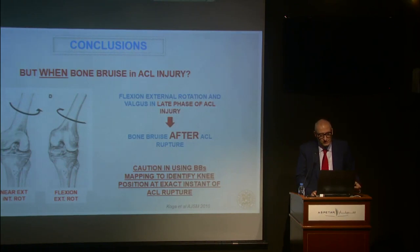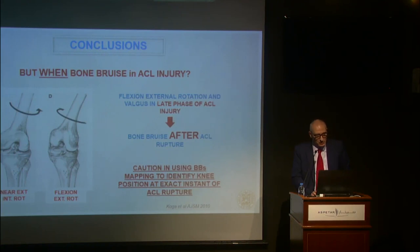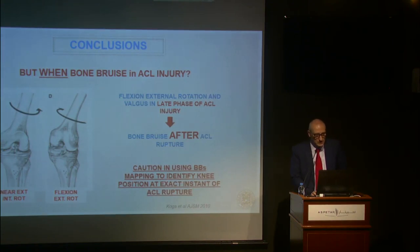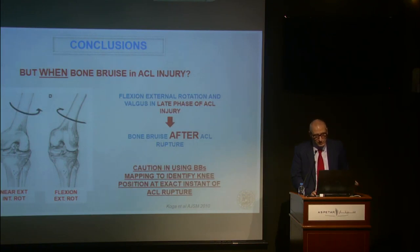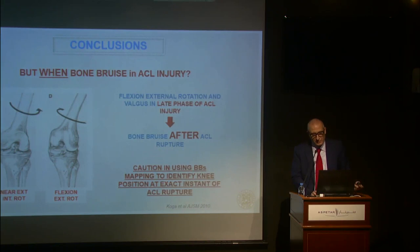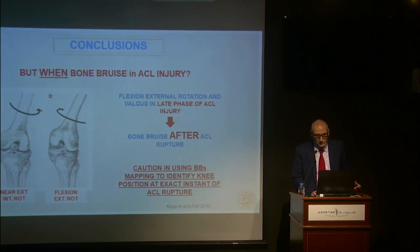Flexion, external rotation, and valgus are in the late phase of ACL injury. So probably for us the bone bruise occurs after ACL rupture. We urge caution in using bone bruise mapping to identify knee position at the exact instant of ACL rupture, because this is not the ACL injury moment — it happens after the ACL injury.